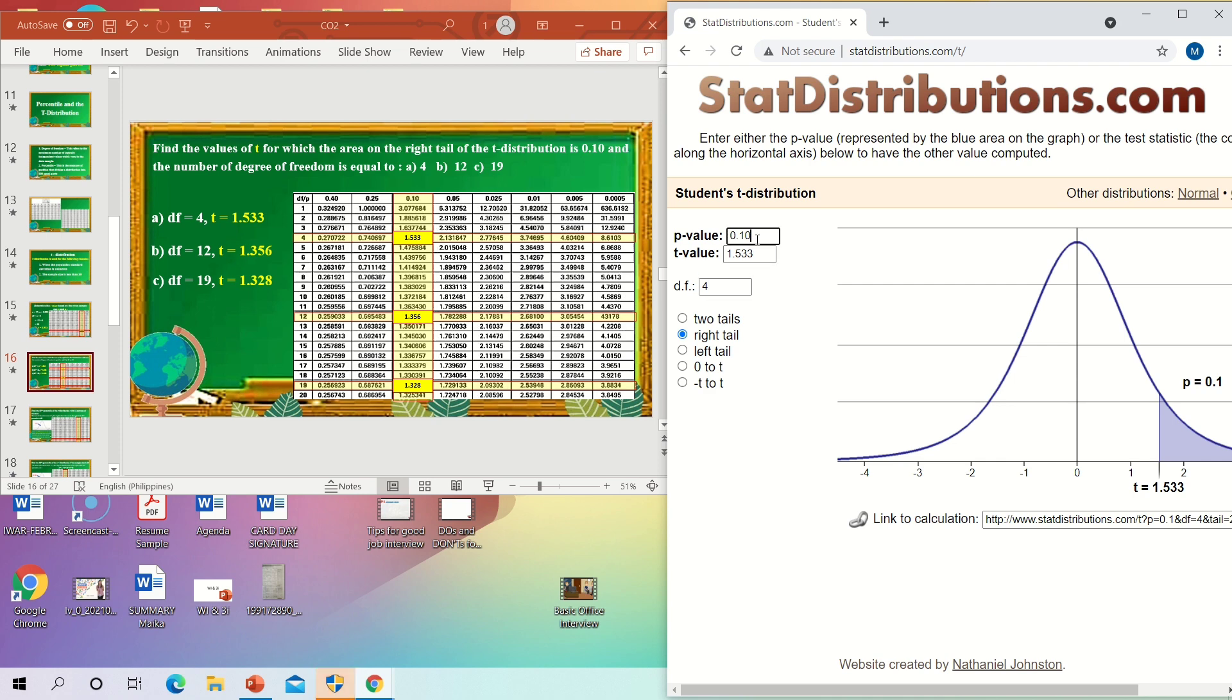So, let's check our next example. So, here the given area is 0.10. This is our area, which is 0.10. And the first degree of freedom is 4. So, the first T value is 1.533. So, it's correct. Same with area 0.10. We just change the degree of freedom, which is 12. There. The answer is 1.356. Correct, that's our letter B T value. And the last one is the degree of freedom, which is 19. The answer that came out is 1.328. So, it's correct. So, that's how it is. If you want to double check your answers, you can use statdistributions.com.